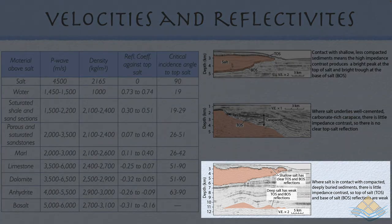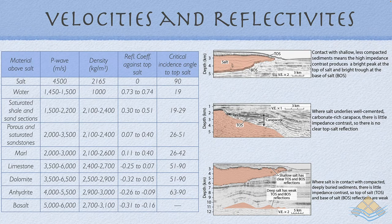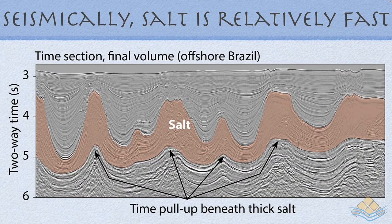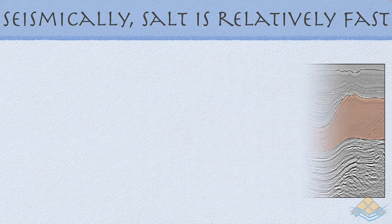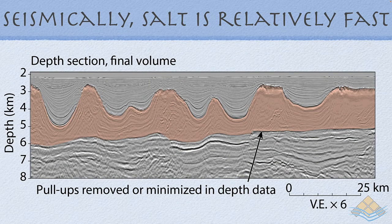Where salt is in contact with more compacted, deeply buried sediments, the contacts tend to be acoustically transparent due to lack of impedance contrast. Deep salt typically has weak top-of-salt and base-of-salt reflections because adjacent indurated sediments are approaching the same velocities and densities as the salt mass. Where salt underlies unconsolidated sediments, a velocity pull-up is observed, and the base of salt in an uncorrected two-way time section shows significant pull-up beneath the salt due to varying salt thicknesses, which must be corrected when converting to a depth section.